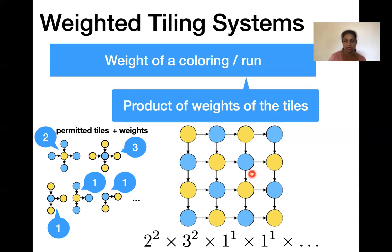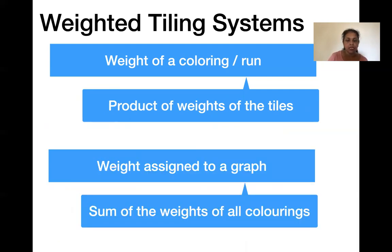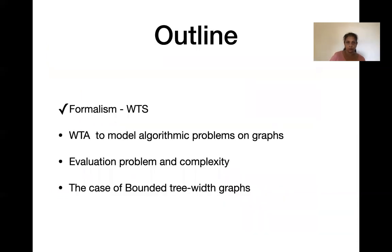For example, in a particular coloring, if one tile appears twice we get its weight squared, and another tile appearing twice gives its weight squared as well. For each tile we look at its number of occurrences and take the product accordingly — we take the product of all tiles appearing in the coloring. The weight assigned to a graph is then the sum of the weights of all possible colorings.